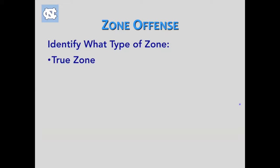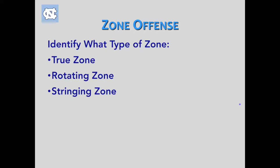The first is a true zone — a stationary zone where you have six zone spots and they don't really move too much. The next is what I'll call a rotating zone: a five-man rotation around a crease guy, which is the one that most colleges use today. Then there's what I call a stringing zone — they'll string either top to bottom or side to side, with four zone guys and two stringing through. And lastly, the backer zone, where the crease guy acts as the middle linebacker backer.